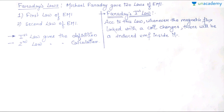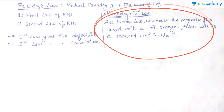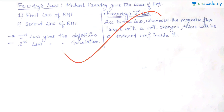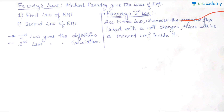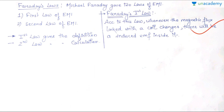So what is Faraday's first law? According to this law, whenever the magnetic flux linked with a coil — meaning a loop — changes, there will be an induced EMF inside it.